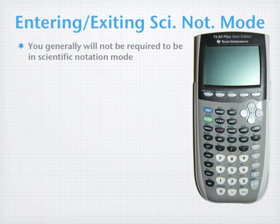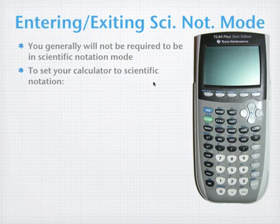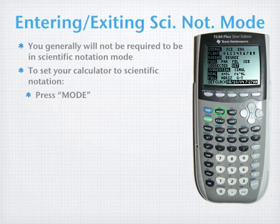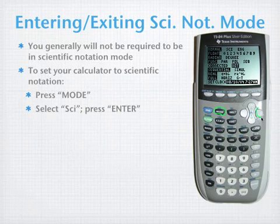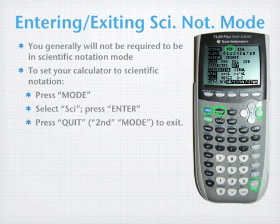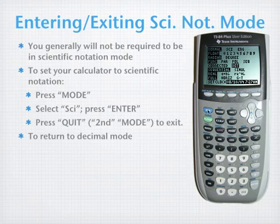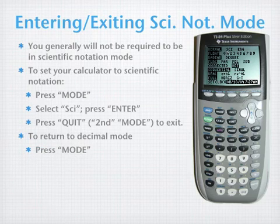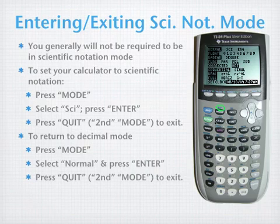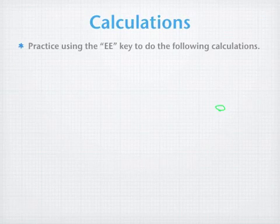You don't always have to have your calculator in scientific notation mode, but if you want to enter scientific notation mode, press the mode key. Use the arrow key to highlight SCI and press enter — that gives you scientific notation mode. Then press second-mode, which is quit, to exit the mode screen. To return to decimal mode, hit mode again, the SCI will be highlighted, click the left arrow to get back to normal, hit enter, then press second-mode to quit out of the screen and you're out of scientific notation mode.